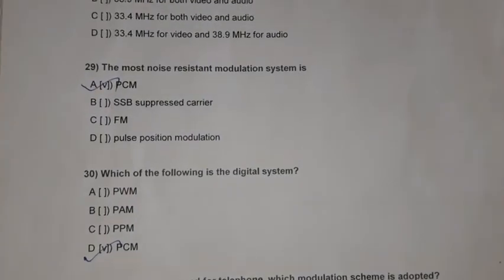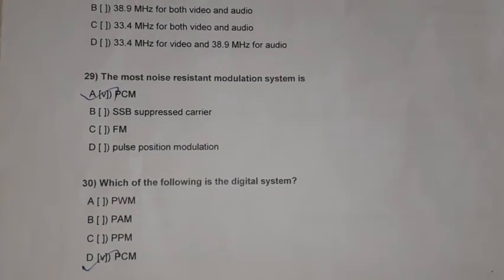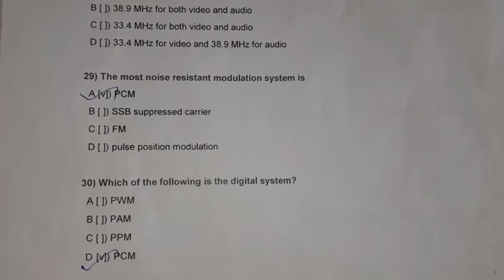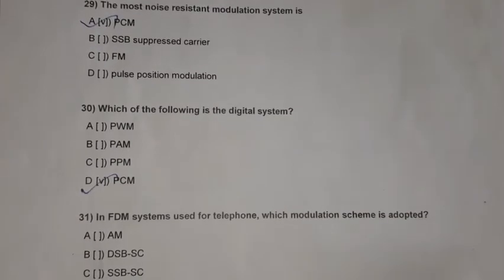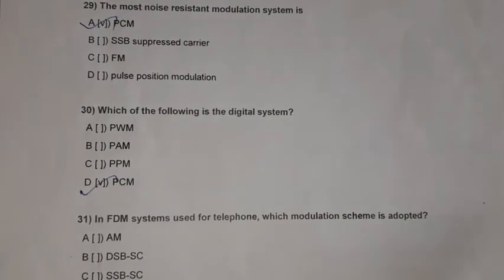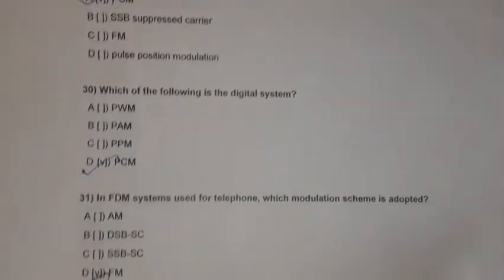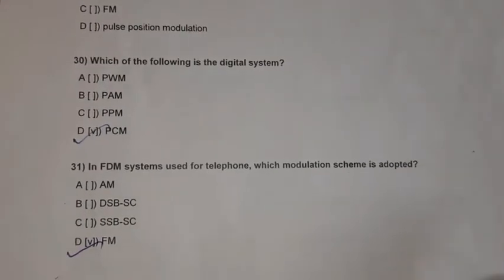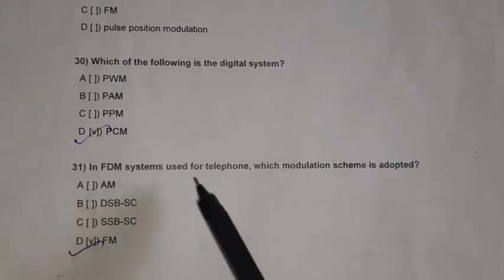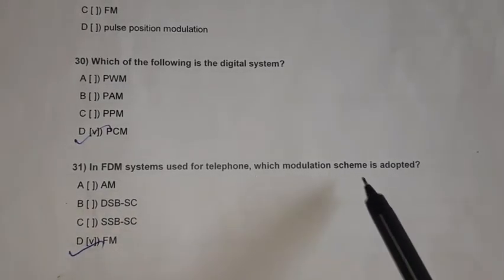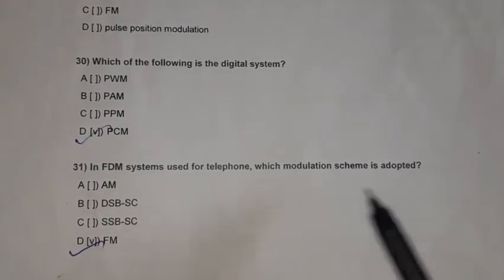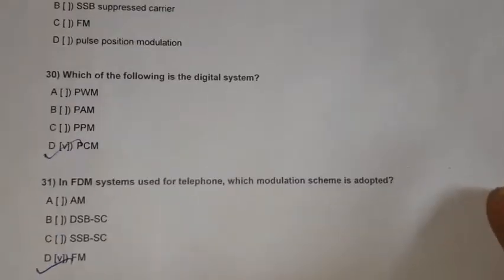Question 30: Which of the following is a digital system? Among PWM, PAM, PPM, and PCM — pulse code modulation is the digital system. Question 31: In FDM frequency division multiplexing systems used for telephone, the modulation scheme used is FM.